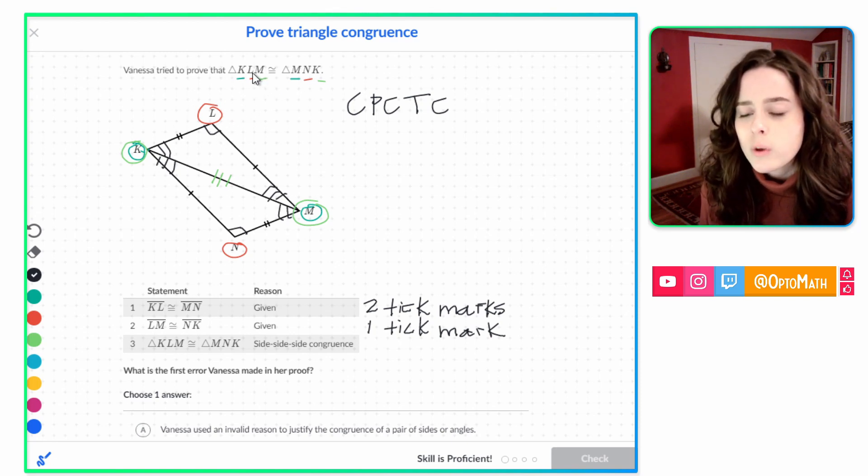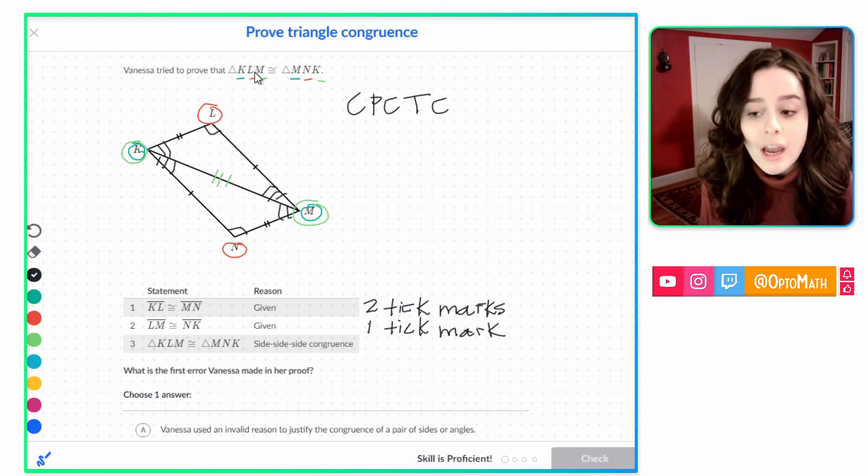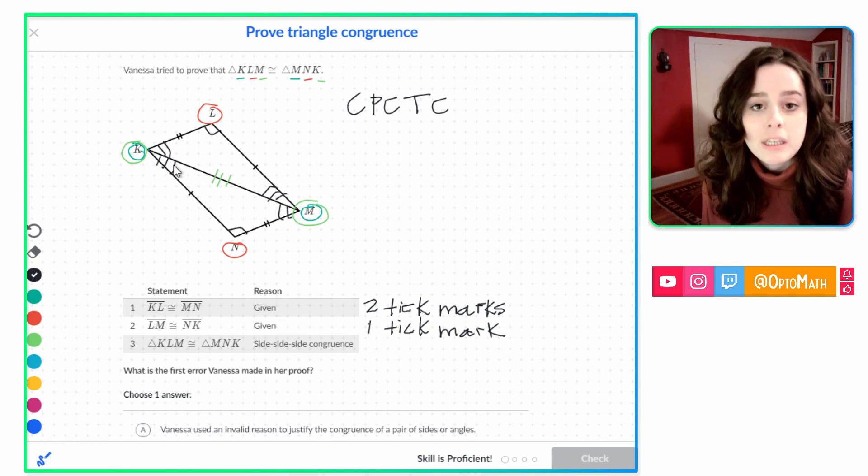LMK is going to be the second, the last, then the first. So that has to be congruent to NKM. So that ought to have three arc marks. Let's see if we did that right. NKM. Yes, we did.